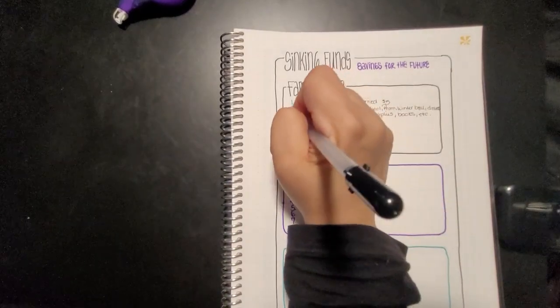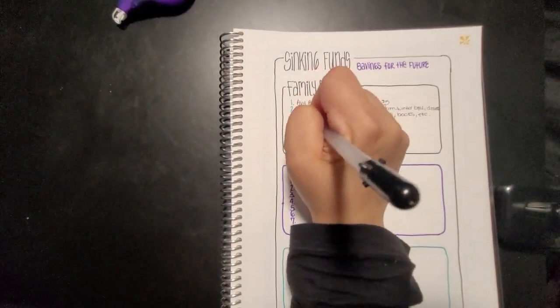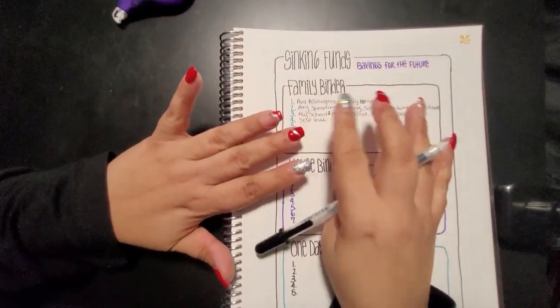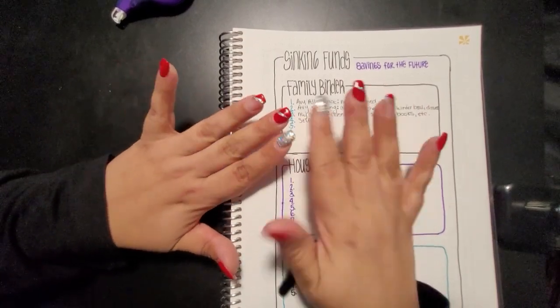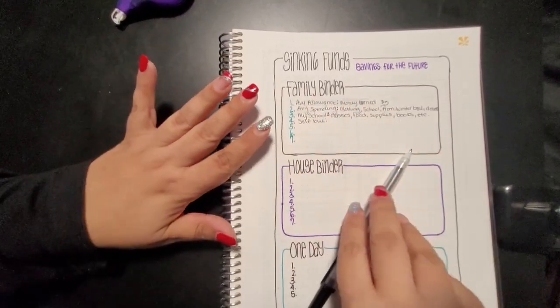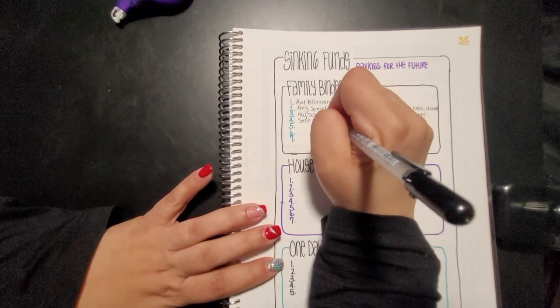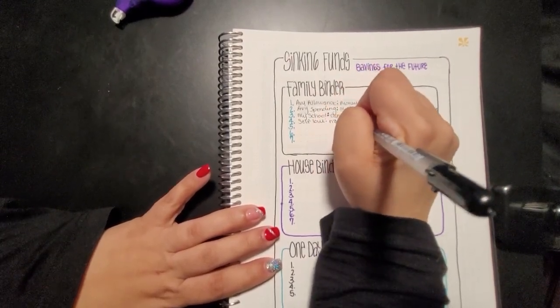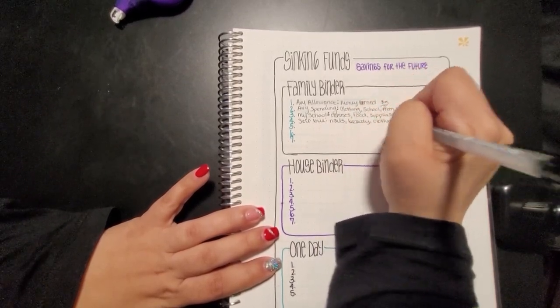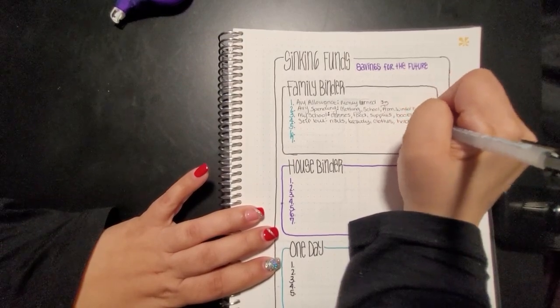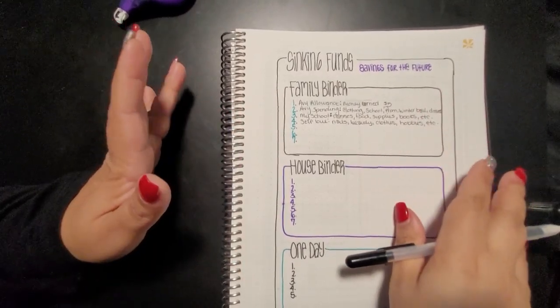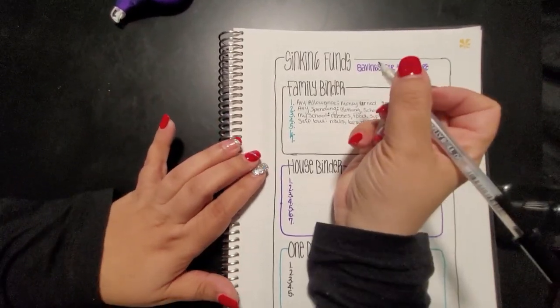The next one is going to be self-love. I have been getting my nails done every three weeks. I got them done before Christmas, and these right here are my actual nails. I worked really hard to get them this long. So it's going to be for my nails, it's going to be for beauty, it's going to be for clothes, it's going to be for hobbies, etc. Anything that I need for myself is going to be in that one, because sometimes you need to take care of yourself too.